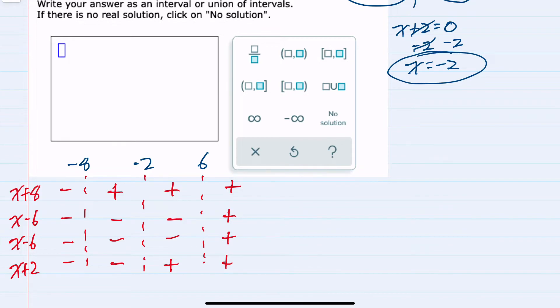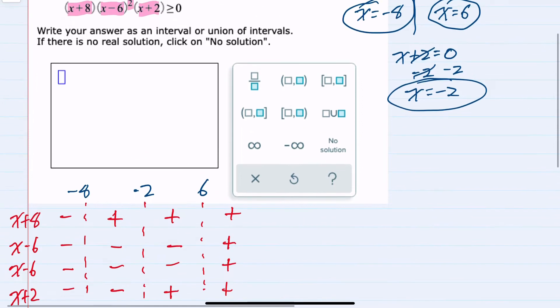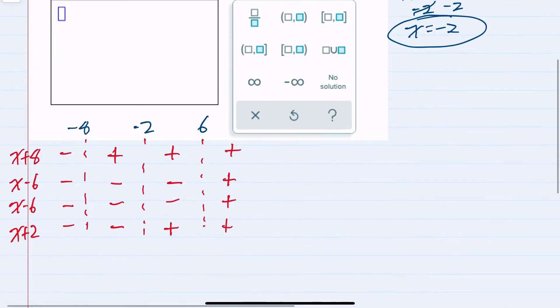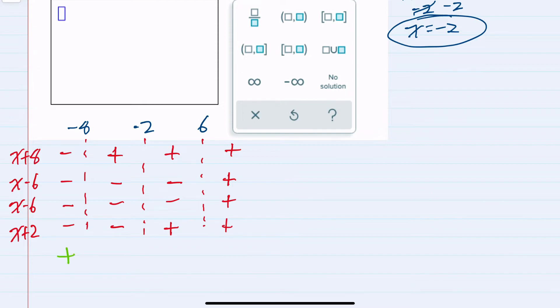And now that I have all of these expressed for each one of the individual factors, in the original question here, you can see that we're multiplying these. So if I were multiplying 4 negatives, my result would be positive. If I'm multiplying 3 negatives, that would be negative. Multiplying 2 negatives is positive, and multiplying 4 positives is positive.